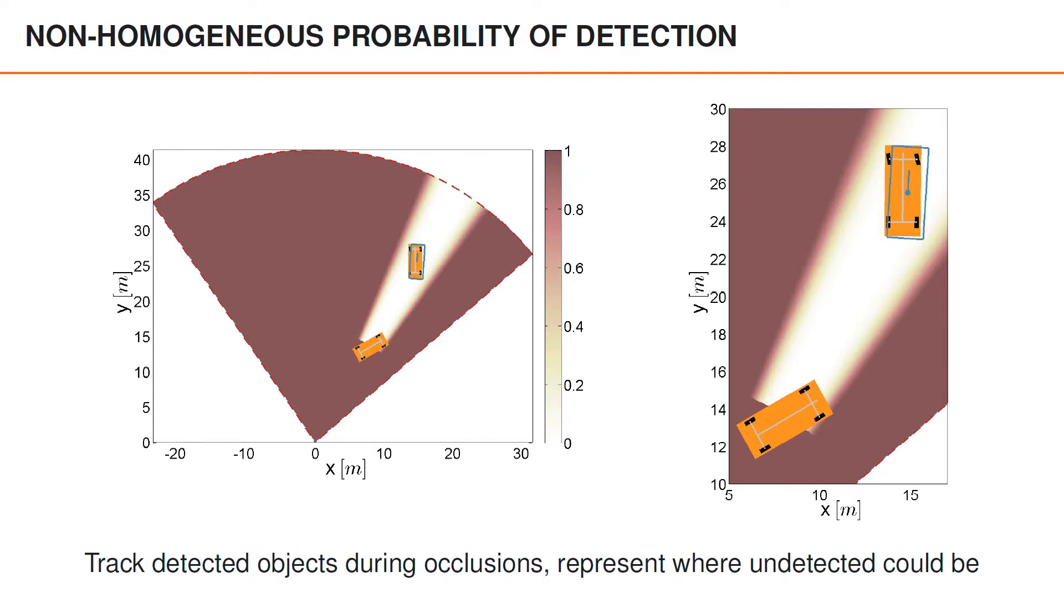So if an area remains occluded for a longer period of time, there is an increasing probability that some undetected objects might be located there. On the right, you can see a comparison of the car estimate in orange, and the ground truth in blue. And as we can see, we have a fairly accurate estimate, even though the car is fully occluded. So if an area remains occluded for a longer period of time, there is also an increasing probability that some undetected objects might be located there.